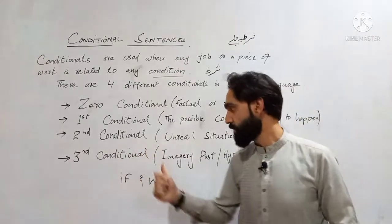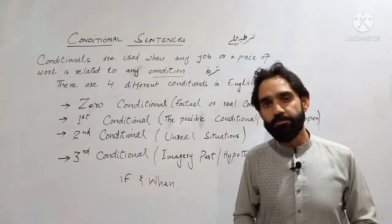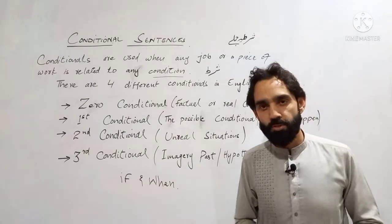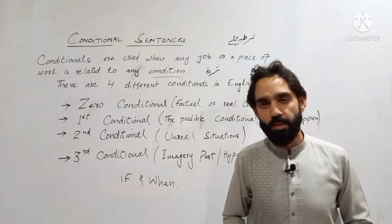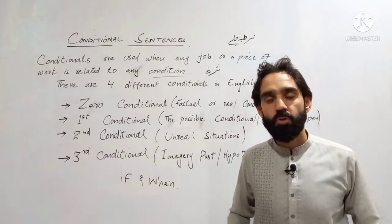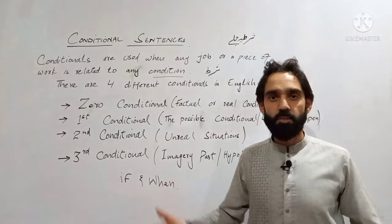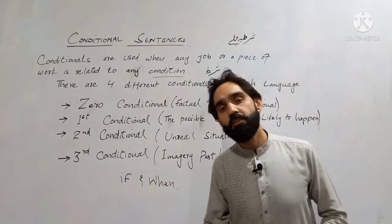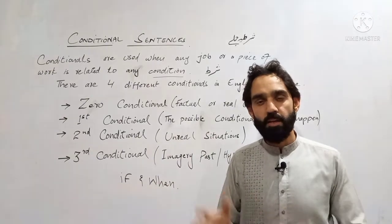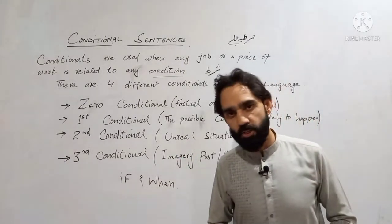Then we have the second conditional — unreal situations. Second conditional is a little difficult; it may be a little tricky, but if you pay attention you can get it easily. Unreal situation se murad yeh hai — for example: 'اگر میرے پر ہوتے تو میں اڑتا' — which is not real, not possible. یا 'اگر ماؤنٹ ایوریسٹ سونے کا ہو جائے تو پاکستان سپر پاور بن جائے۔' یہ unreal situation ہے — ہم صرف خیالی پلاؤ بنا سکتے ہیں، حقیقت میں ایسا ممکن نہیں۔ ایسی باتیں second conditional میں آئیں گی۔